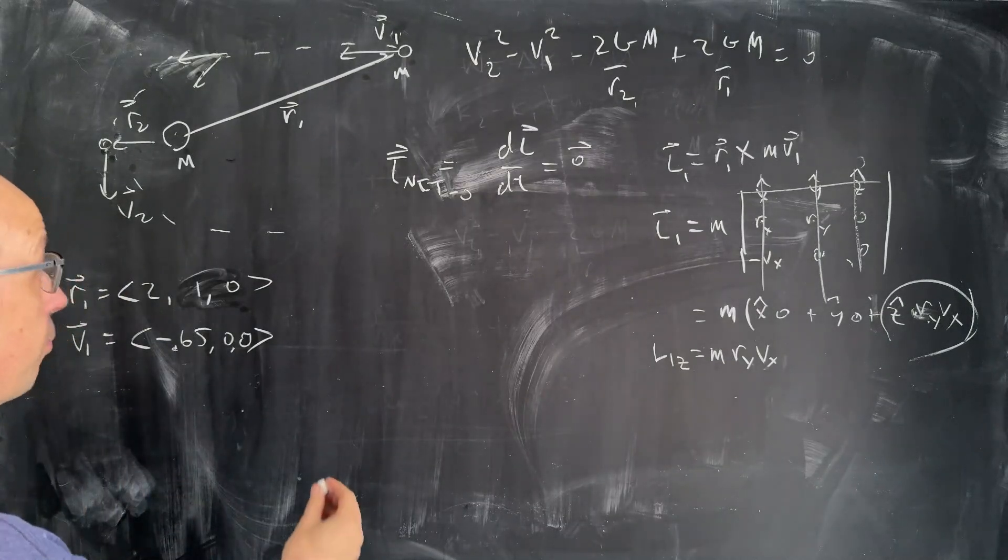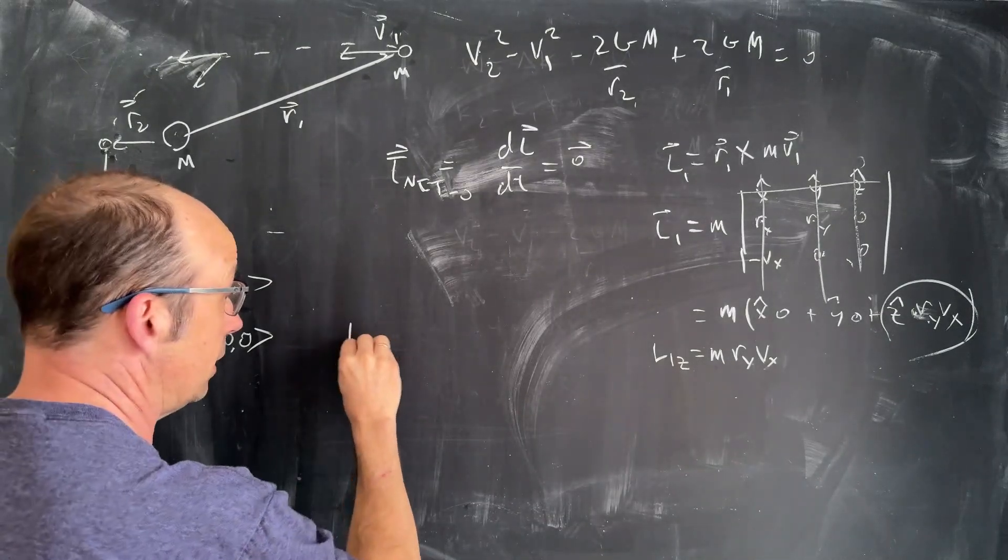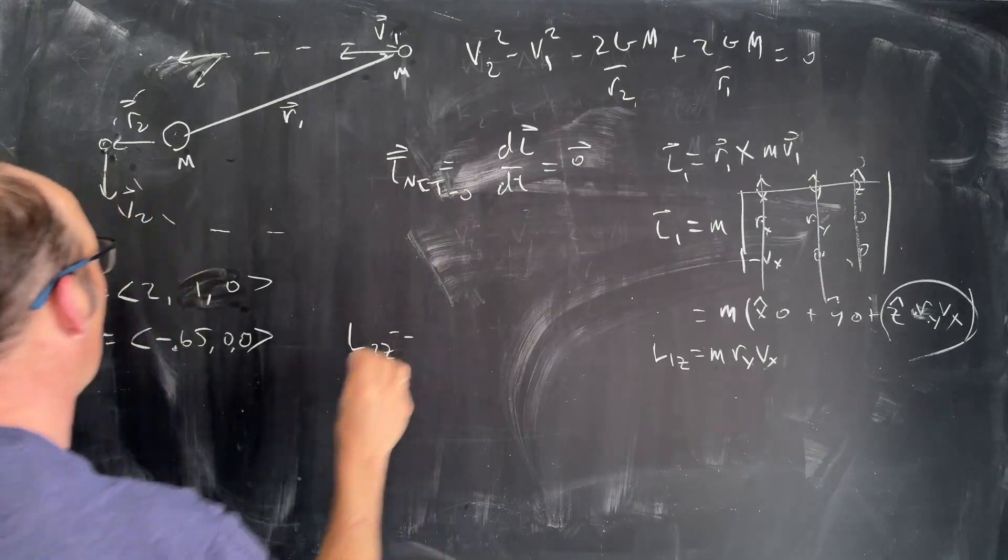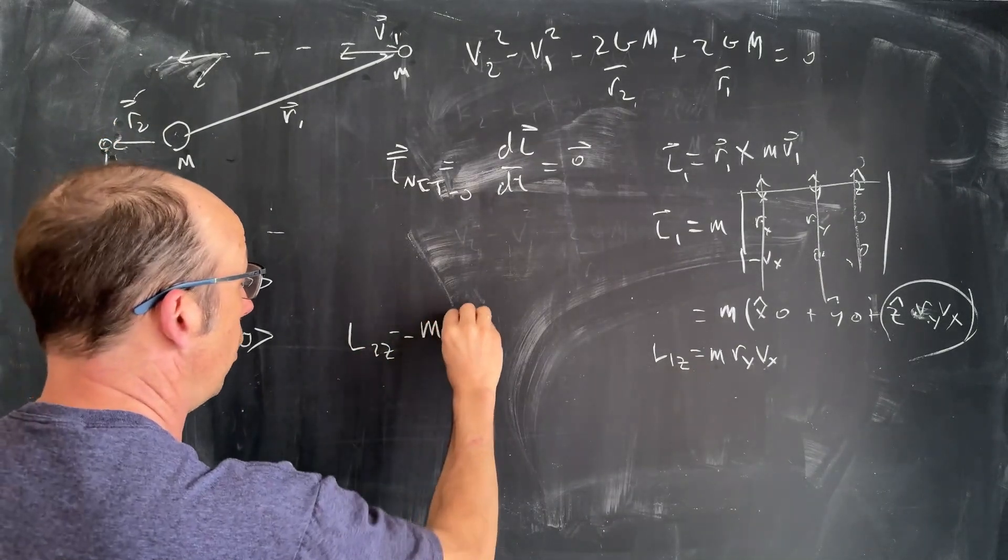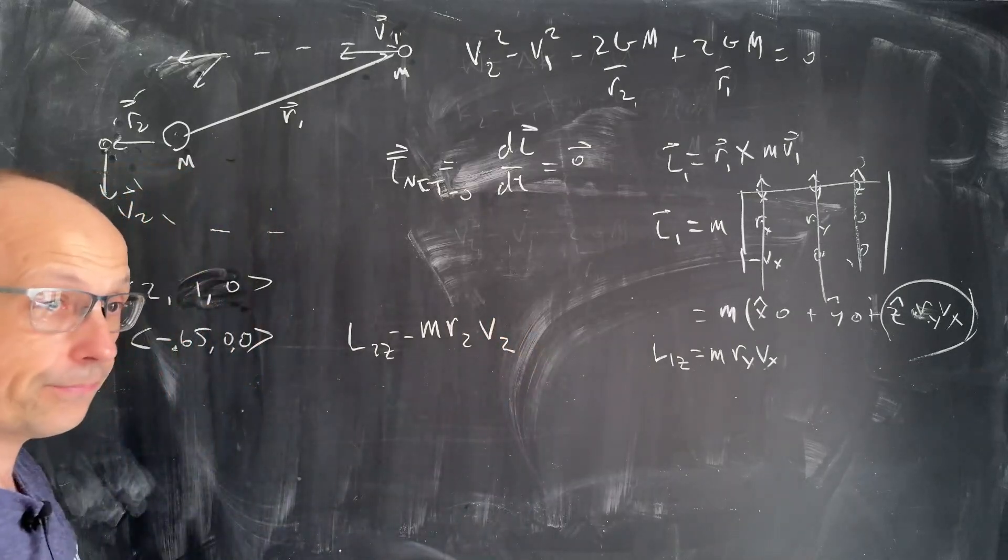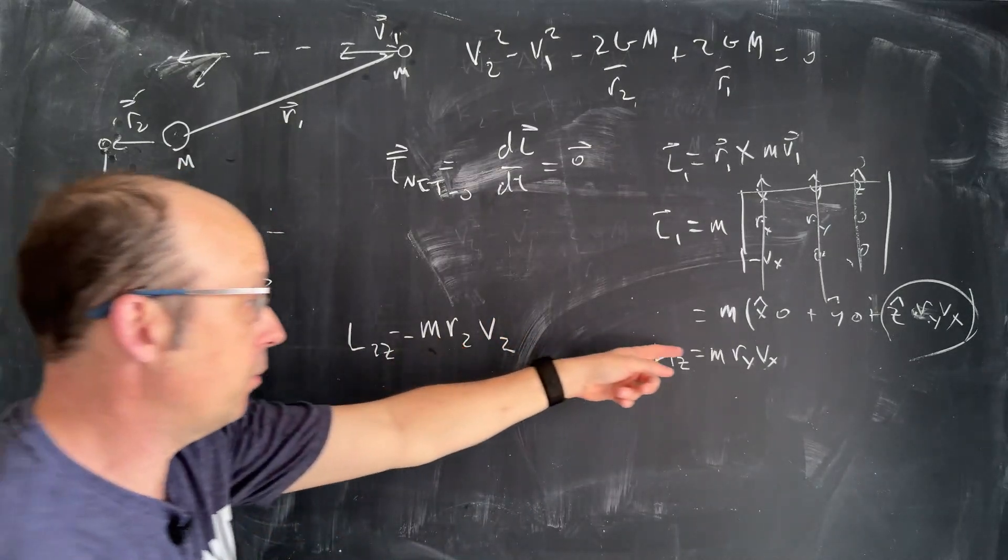These two have to be perpendicular at closest approach, right? Because if it wasn't, then it would keep getting closer or further away. That's the only way that it's going to be at closest approach. So that means I can write an expression for L2z. It's just going to be R cross P, but those are perpendicular, so it's pretty easy. MR2V2, and that's the magnitude.